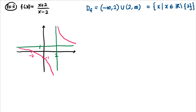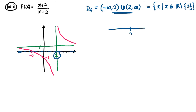Looking at the graph, the domain covers any point on the x-axis except x = 2, where the function is undefined. On the number line, it can be anywhere but at 2.